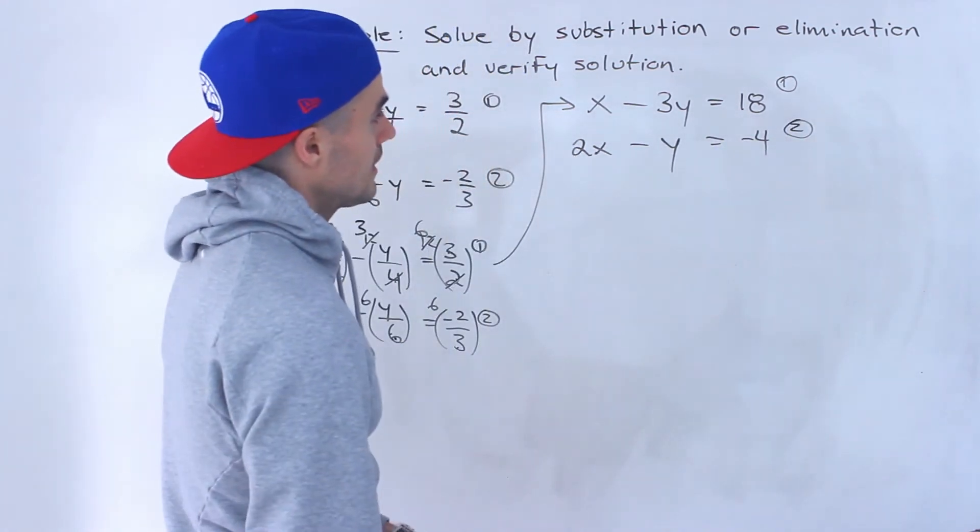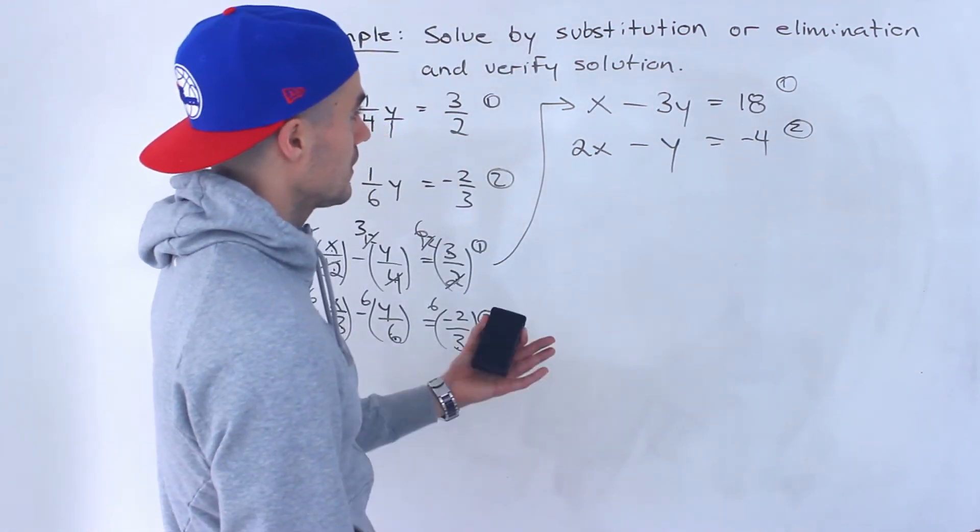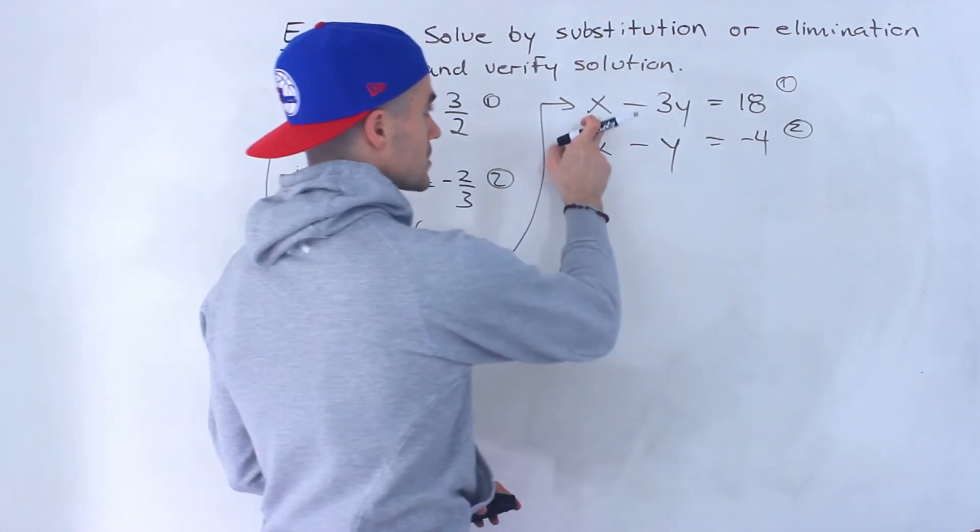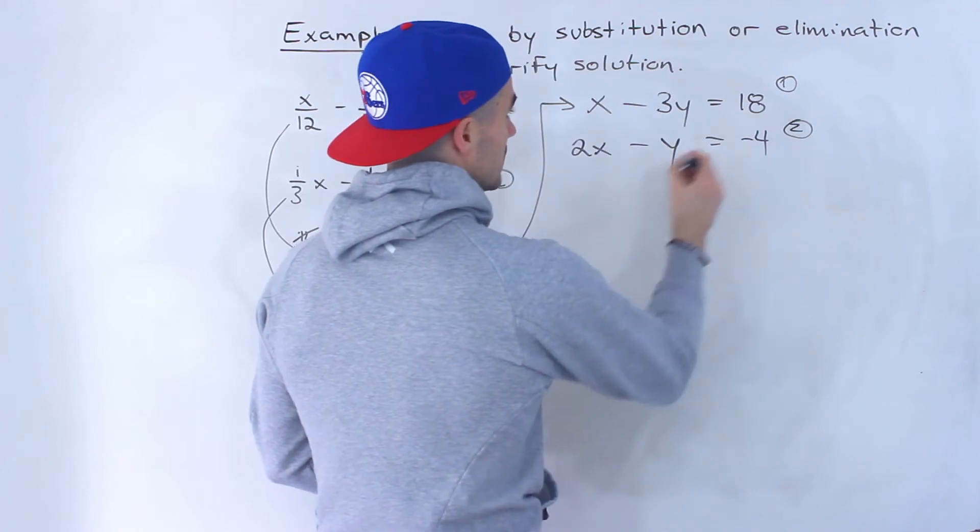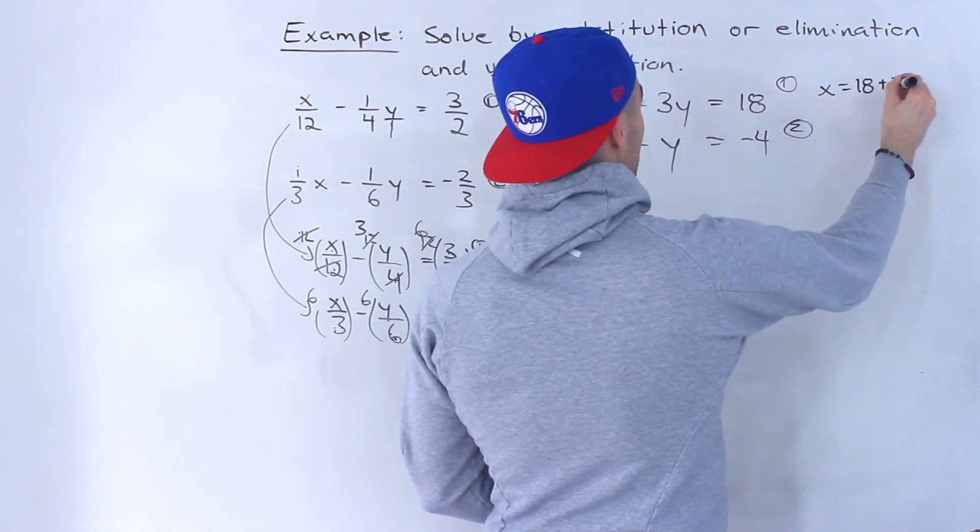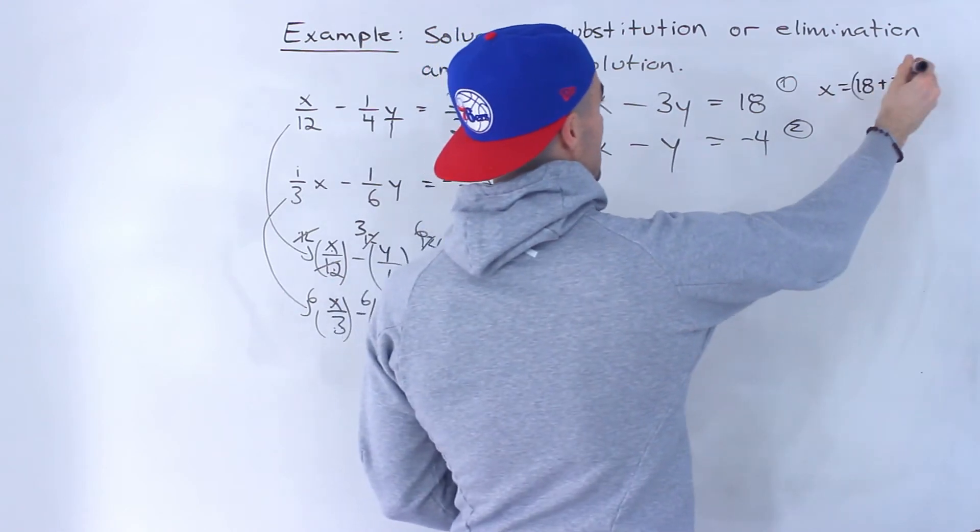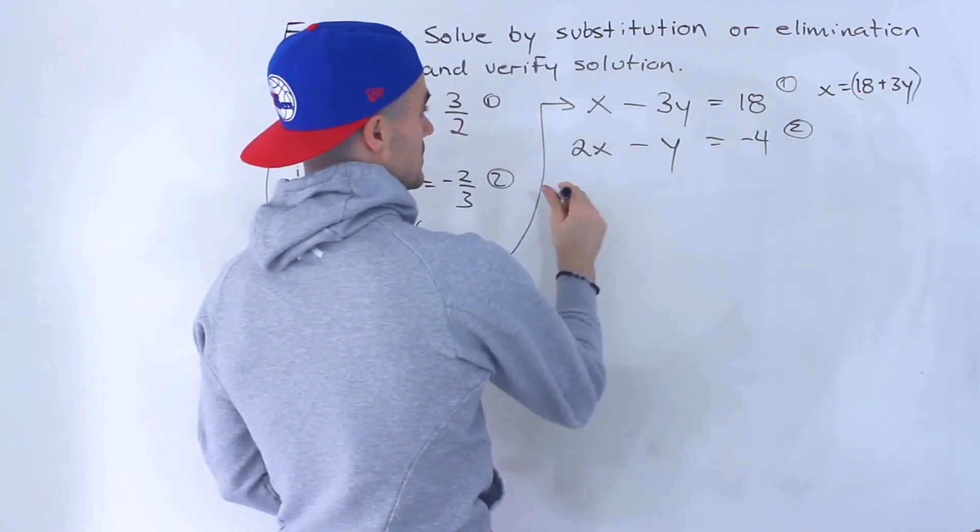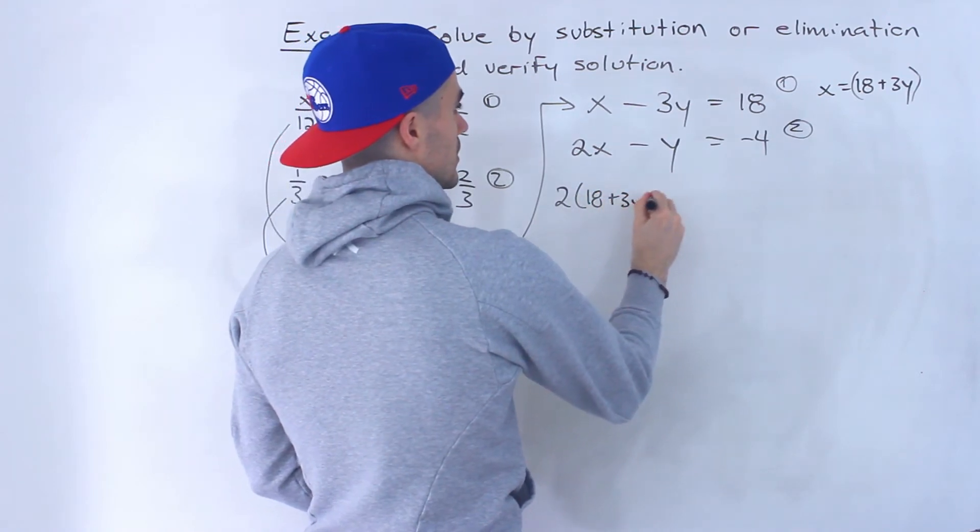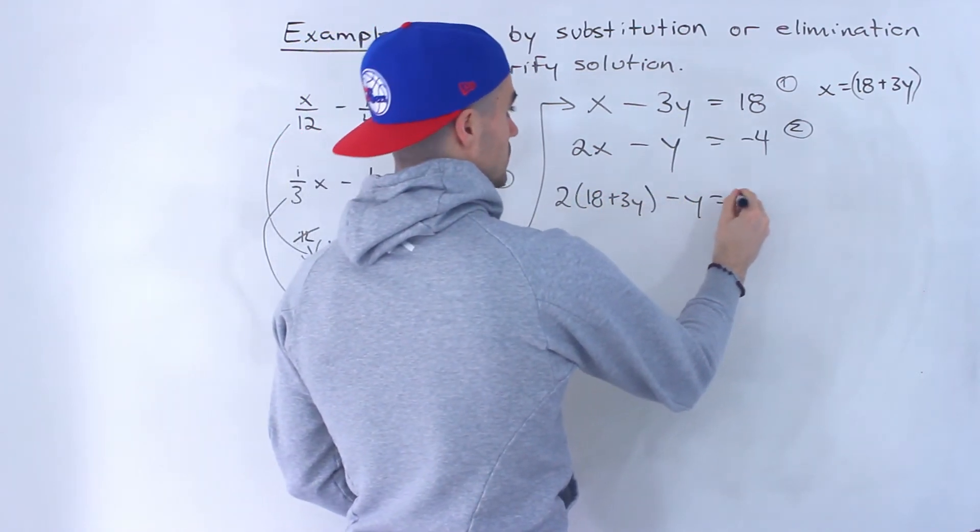And so now what would happen is from here we can solve by substitution or elimination. What I'm going to do is I'm going to isolate for this x here. So we'll have x equals 18 plus 3y. Then I'm going to take this and sub it in for this x.